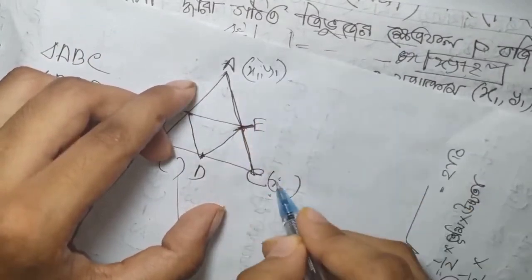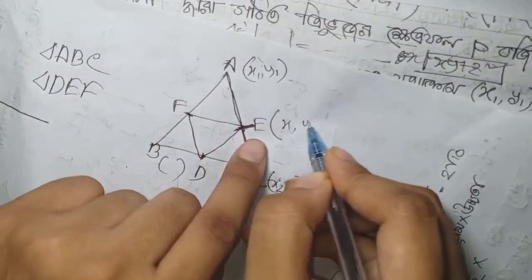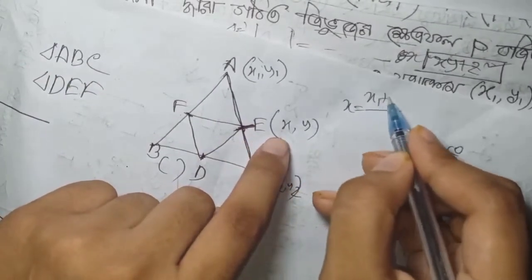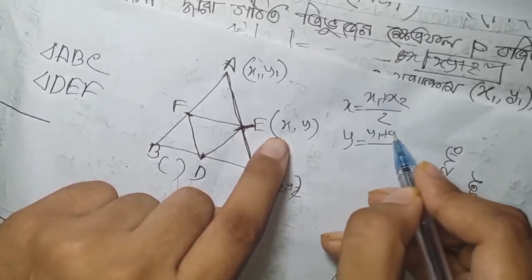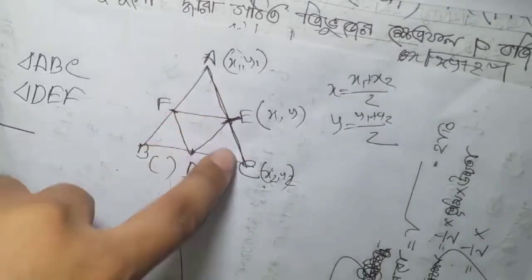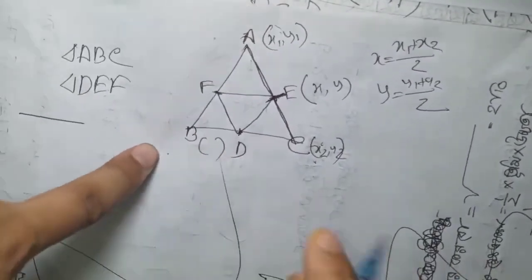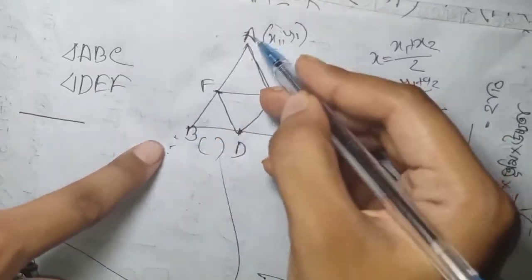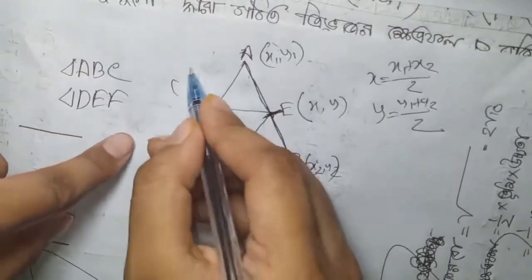We are going to take a look at x1, y1, x2, y2. Then x1 plus x2, x1 plus x2 divided by 2, y1 plus y2 divided by 2. So we are going to take a look at 3 and 3, and then x1 plus x2 divided by 2.